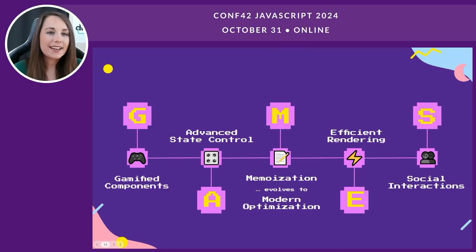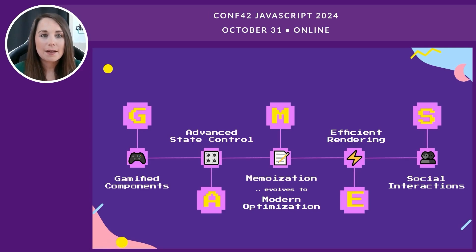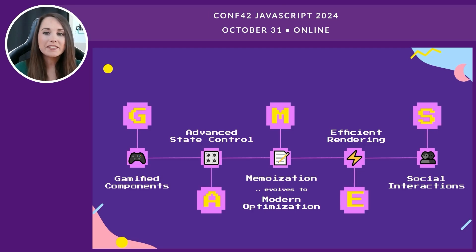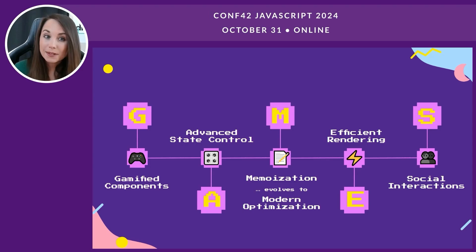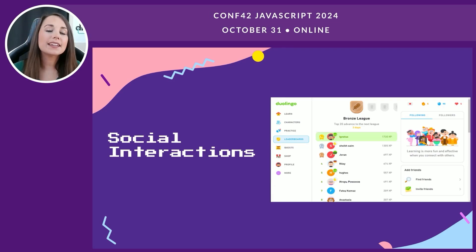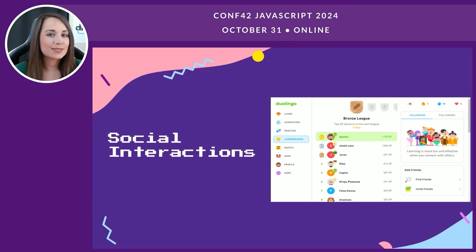The S in GAMES stands for social interaction, which brings a new dimension of engagement to apps. Adding social features allows users to share achievements, compete with each other, and feel a sense of community. Social interaction encourages users to return not just for individual rewards, but also for the fun of competition. Duolingo does this exceptionally well with their leaderboard and social sharing features, allowing users to follow friends and see their language milestones.